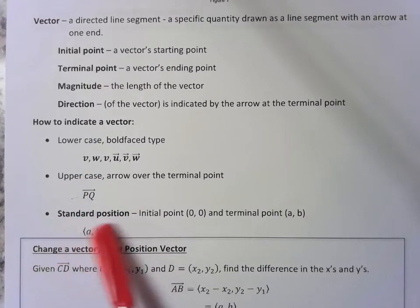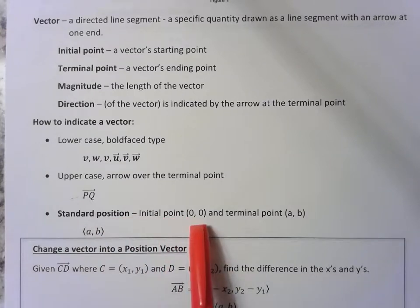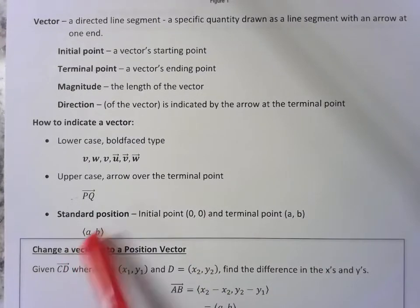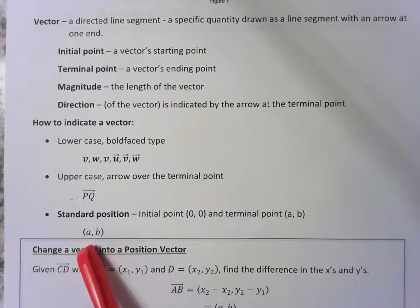And then a vector in standard position has the initial point at (0,0) and its terminal point at (a,b). And we could use these brackets with our AB inside them.